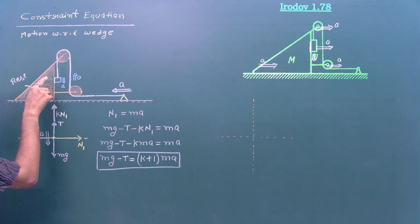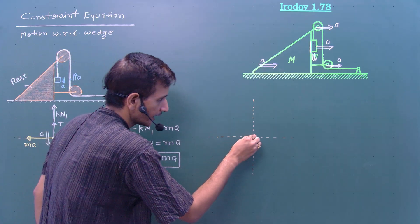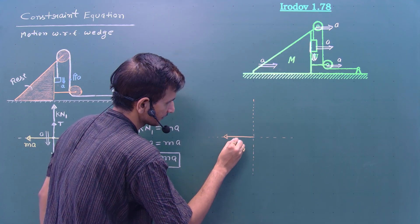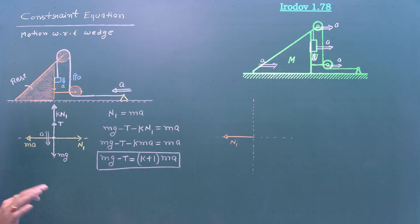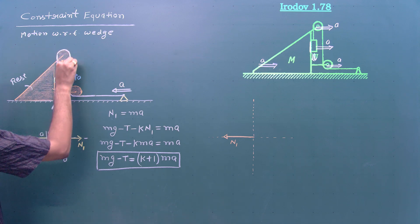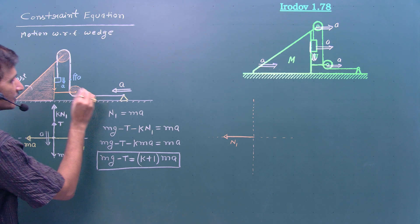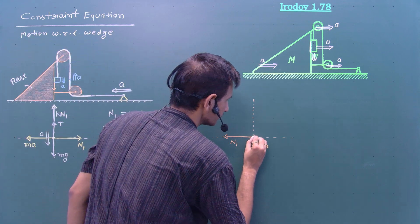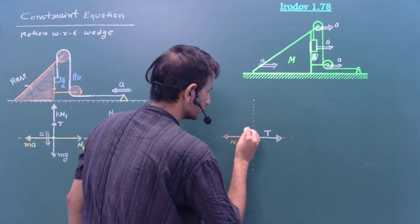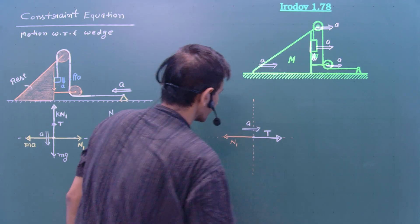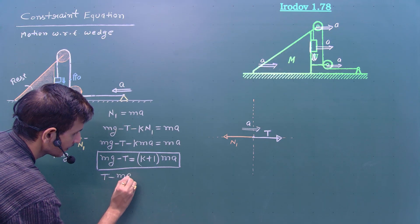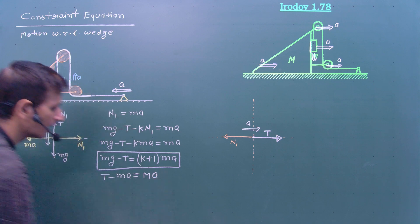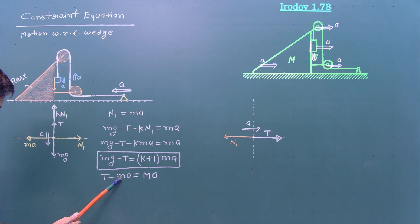The block exerts a normal force N1 on the wedge in the minus x direction. The friction acts in the y direction, so we don't need it here. The tension from this part of the rope acts in the x direction. Due to these forces, the wedge moves in the plus x direction with acceleration a. The equation is: T minus N1 equals M·a. Since N1 = ma, we get: T minus ma equals M·a. This is the second equation.